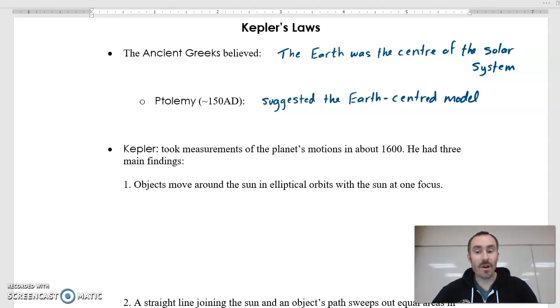When we look at Johannes Kepler, he actually took measurements about planetary motion. Everything up until then was just Greek thought. It was philosophers, not so much science being done, or testing, or measurements. Kepler changed all that when he started taking measurements of planets' motions in 1600 AD. Isn't that insane? That's so far past 150 AD that the Earth was believed to be the center of the solar system. So he had three main findings.